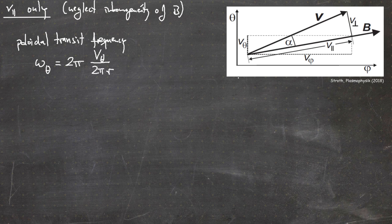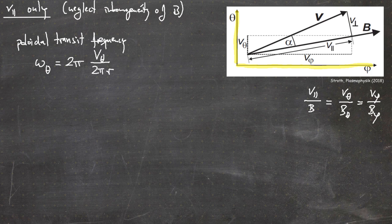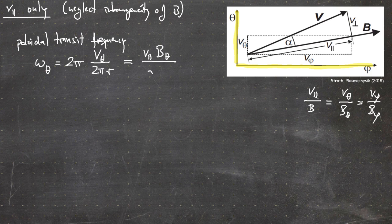Looking at the coordinate system, we have the poloidal direction, the toroidal direction, the magnetic field, and the velocity. We can write that the ratio of V_parallel over B equals V_theta over B_theta, which equals V_phi over B_phi. Using that expression, we can insert V_parallel for V_theta in the expression for the poloidal transit frequency.